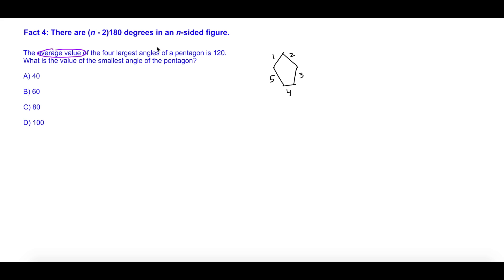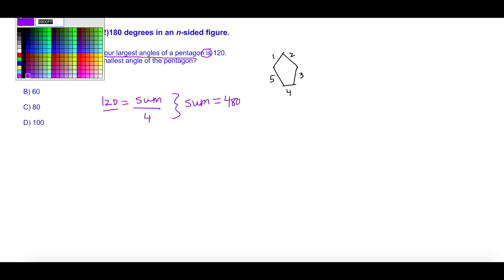Second thing you need to know is just the general formula for finding - not area - average. So the average value of the four largest angles is 120. In other words, 120 (your average) equals the sum of those four angles divided by the number of angles, which is four. So you could find the sum of those four angles by just multiplying 4 times 120. You got 480. That's your first step.